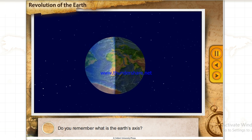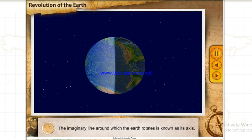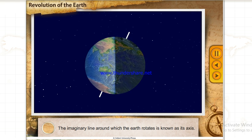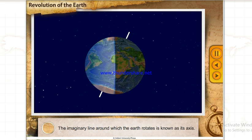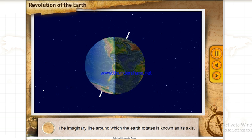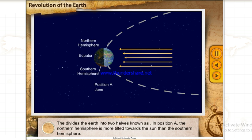Do you remember what is the Earth's axis? The imaginary line around which the Earth rotates is known as its axis. The equator divides the Earth into two halves known as hemispheres.